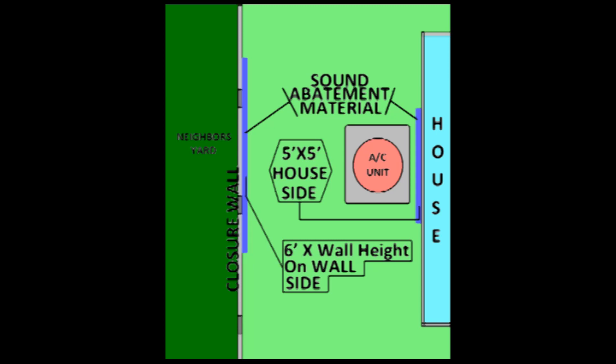In this illustration, you see an AC unit sandwiched between the house and a closure wall. In this case, you can reduce noise substantially by mounting a sound abatement product against a 5 by 5 foot area on the side of the house of the AC unit and a 6 foot width by the height of the closure wall. Now, choose a product that can be painted and resists all the elements.